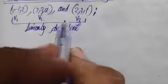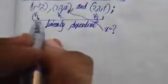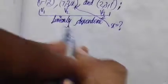Since these vectors are linearly dependent, when we find the determinant of these three vectors, it is going to be equal to zero. Our main intention is to find the value of x. So let us write v1, v2, and v3 and set the determinant equal to zero. Writing the vectors, we get the matrix with rows (1, -1, 2), (7, 3, x), and (2, 3, 1), and its determinant equals zero.